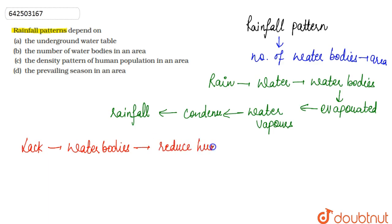This reduced humidity will adversely affect the rainfall. Areas which have more water bodies receive more rainfall.